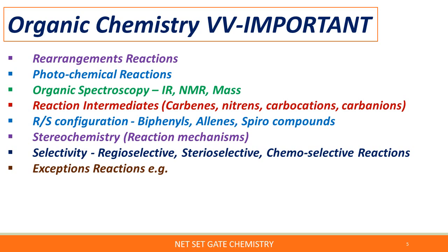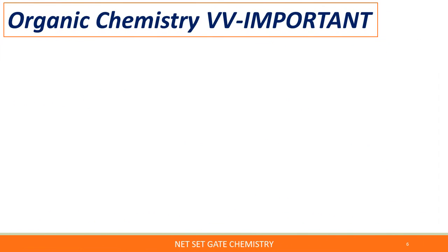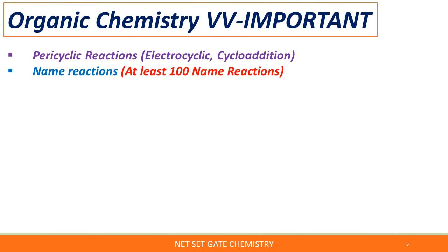Exception reactions are frequently asked in the CSIR NET and GATE chemistry exams. You have to cover aromaticity, terpenes and natural products — monoterpenes, diterpenes, sesquiterpenes, and triterpenes. Also cover amino acids from bioorganic chemistry, in which Sanger's reagents and their effects on amino acid protein chains you have to focus on. Pericyclic reactions — electrocyclic and cycloaddition reactions — you have to cover.